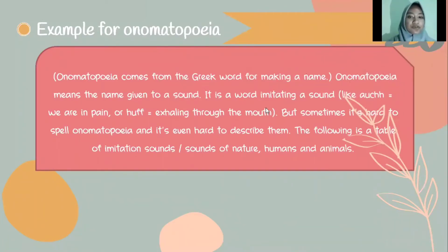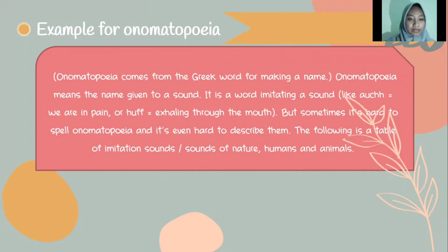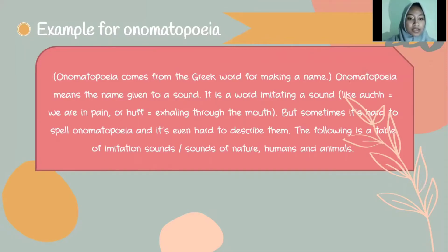The last part will be explained by Rina. Next example for onomatopoeia: onomatopoeia comes from the Greek word for 'making a name.' Onomatopoeia means the name given to a sound. It is a word imitating a sound, like 'anj' when someone is in pain, or 'huff' when exhaling through the mouth. But sometimes it is hard to spell onomatopoeia, and even harder to describe them. The following is a table of imitation sounds — sounds of nature, human, and animals.